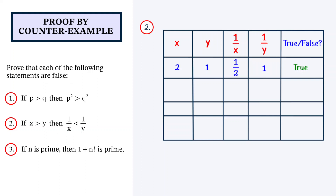Now let's try fractions. Let x be equal to 1 half and y be equal to 1 third. So 1 over x is equal to 2 and 1 over y is equal to 3. This is also true because 1 half is greater than 1 third and 2 is less than 3. Now let's try negative numbers. Let x be equal to minus 5 and y be equal to minus 6. So 1 over x is minus 0.2 and 1 over y is equal to minus 0.17. This is again true because minus 5 is greater than minus 6 and minus 0.2 is less than minus 0.17.